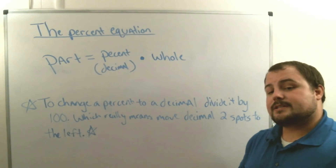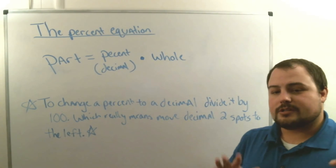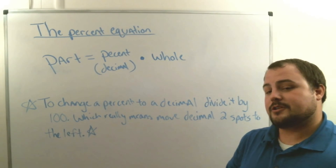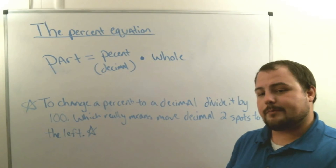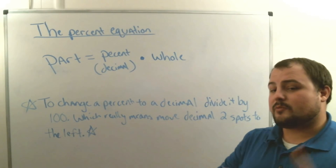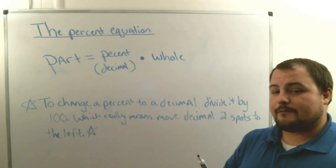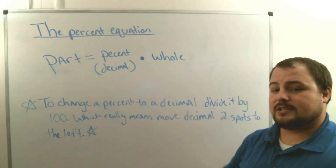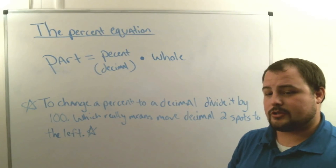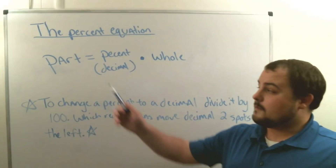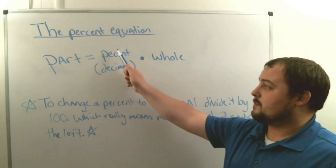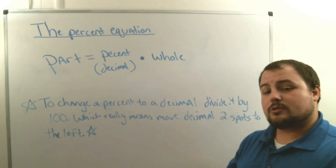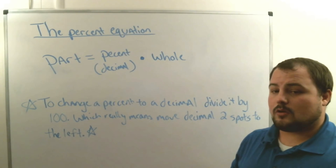The biggest concept in this lesson is the percent equation — not the percent proportion, the percent equation. The most important thing to understand is that our percent has to be a decimal in order to use it correctly. The equation is: part equals percent as a decimal times the whole. Our part is always equal to our percent times our whole, but the percent must be a decimal.